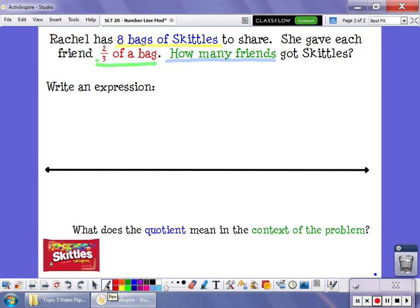If I look at this problem, I know that we're starting with eight whole bags of Skittles. And I'm going to divide them up into groups that are two-thirds of a bag. So my question is, how many groups of two-thirds are in eight wholes?